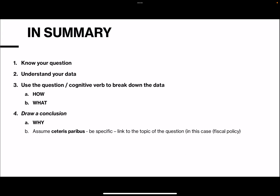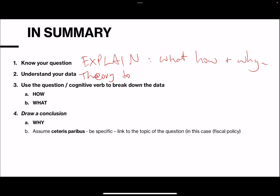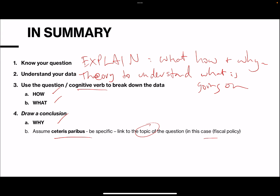So in summary: know your question - this is an explain question, and the simple way is what, how, and why. Understand your data. Link your data to the theory to understand what is going on. Use the cognitive verb to break down the data - in this one, the 'how' and the 'what.' Draw your conclusion - the 'why' - and assume Ceteris Paribus. Link to the topic of the question; in this case, fiscal policy.